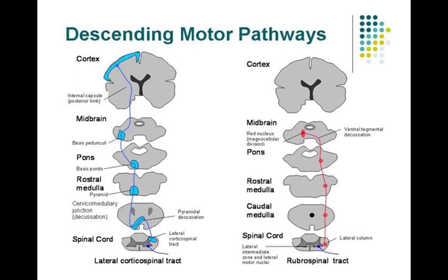Today we are going to discuss these descending motor pathways or motor tracts. Motor tracts are basically made up of two neurons — it is a kind of a bisynapse or disynapse of basically two neurons, or three neurons if there is an interneuron in between. It consists of basically the upper motor neuron and the lower motor neuron. As you can see in this diagram, we have two types of descending motor pathways: one with the first-order neuron originating from the cortex itself — the motor cortex — and the other set where the first-order neuron originates from the subcortical structures, not from the motor cortex.